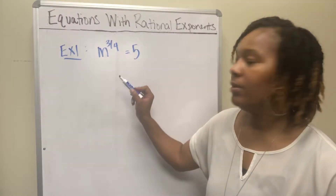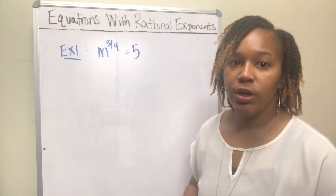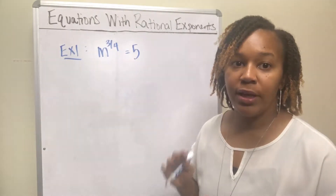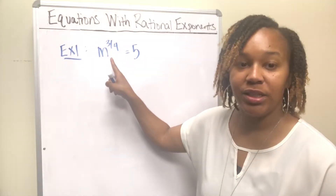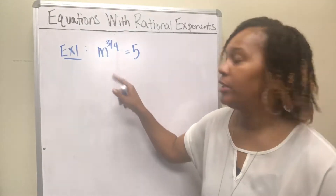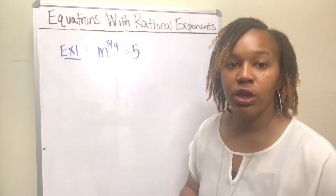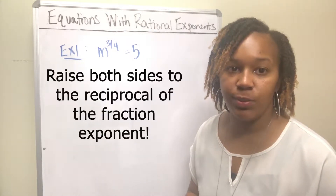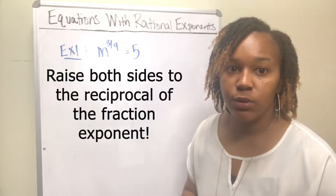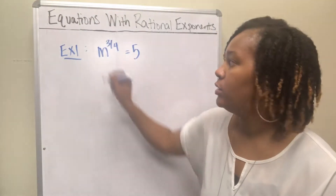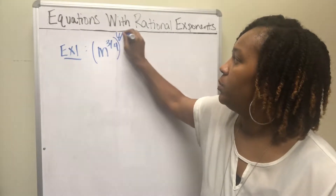Example 1: we want to solve m to the 3/4ths equals 5. In order to solve that, we want to get m on the side by itself, so we've got to get rid of this exponent that is a fraction — 3/4ths. In order to get rid of an exponent that's a fraction, you want to raise both sides to the reciprocal power. The reciprocal of 3/4ths is 4/3rds, so we will raise both sides to the 4/3rds power.